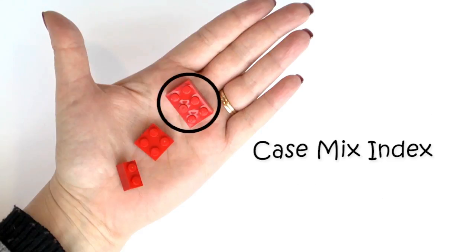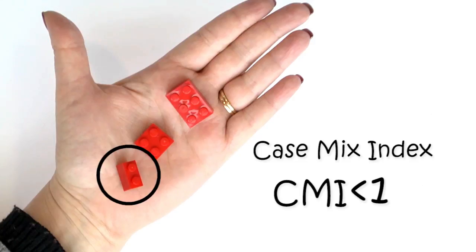This block with six dots represents an individual requiring more resources than the average, while this block with two dots requires fewer resources. Therefore, we can say that these two blocks have different resource weights even though they are categorized into the same clinical category of the resource utilization group.